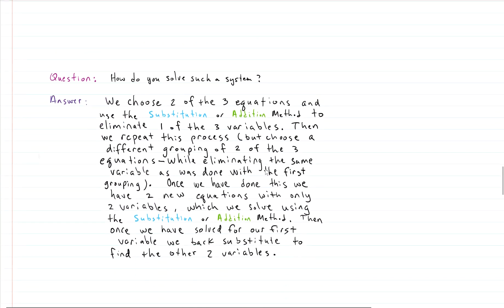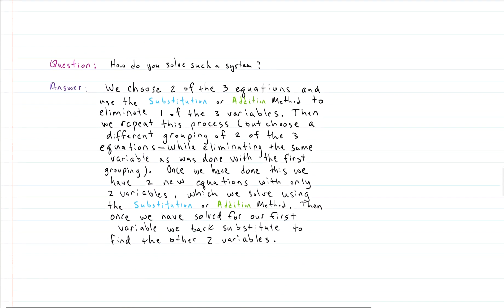To solve these systems, we choose two of the three equations and use substitution or addition to eliminate one of the three variables, then repeat the process with two different equations from the original set to eliminate that same variable. That gives us two new equations with just two variables. We use those to solve for the remaining two variables, then back-substitute into one of the original three equations to find the last variable.